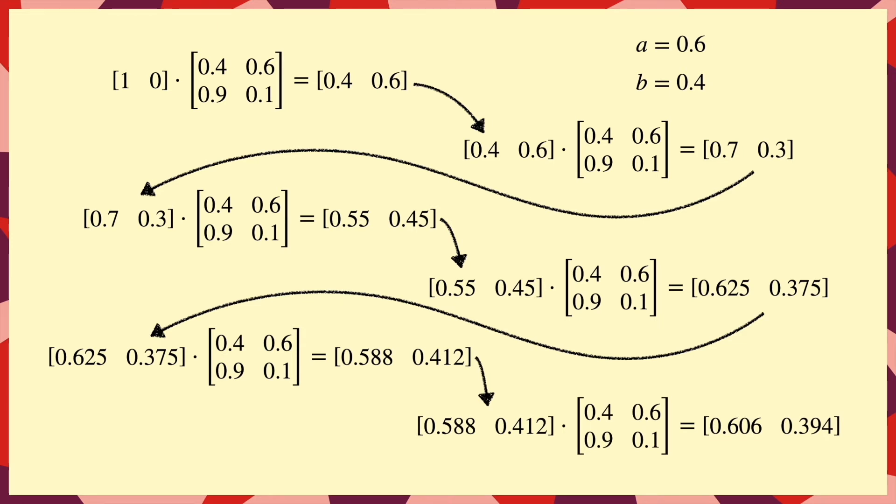After six steps, we're within 1% of the actual values. The same thing would happen if we'd started from state B. This is the phenomenon that Markov chains gradually forget where they started and converge to the stationary distribution, as long as a few conditions are met.